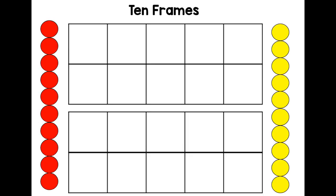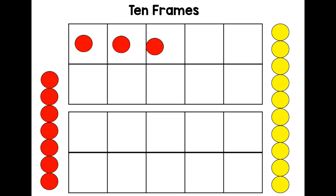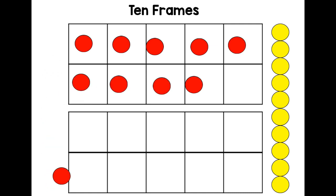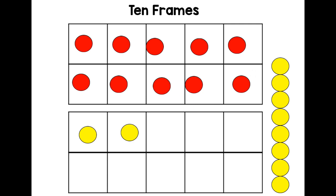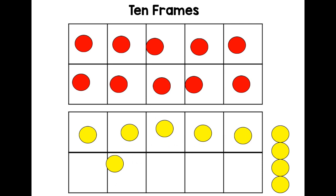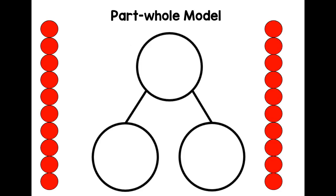Well done everyone! So what is 17 on our 10-frames? Let's have a look. How many is that? Yes, it's 10! And you didn't need to count that because remember, when a 10-frame is full it's always 10. And then: 10, and one more is 11, 12, 13, 14, 15, 16, 17. That's what 17 looks like on a 10-frame.